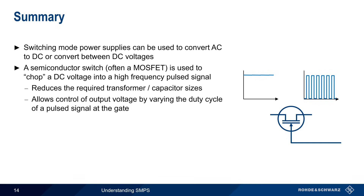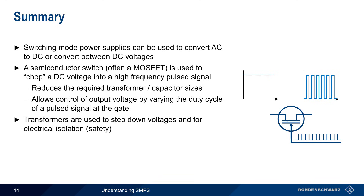And secondly, the output voltage can be controlled or regulated by varying the duty cycle of the pulse signal used to switch the transistor on and off. The transformers found in switching mode power supplies are used both to step down voltages and for electrical isolation or safety purposes.